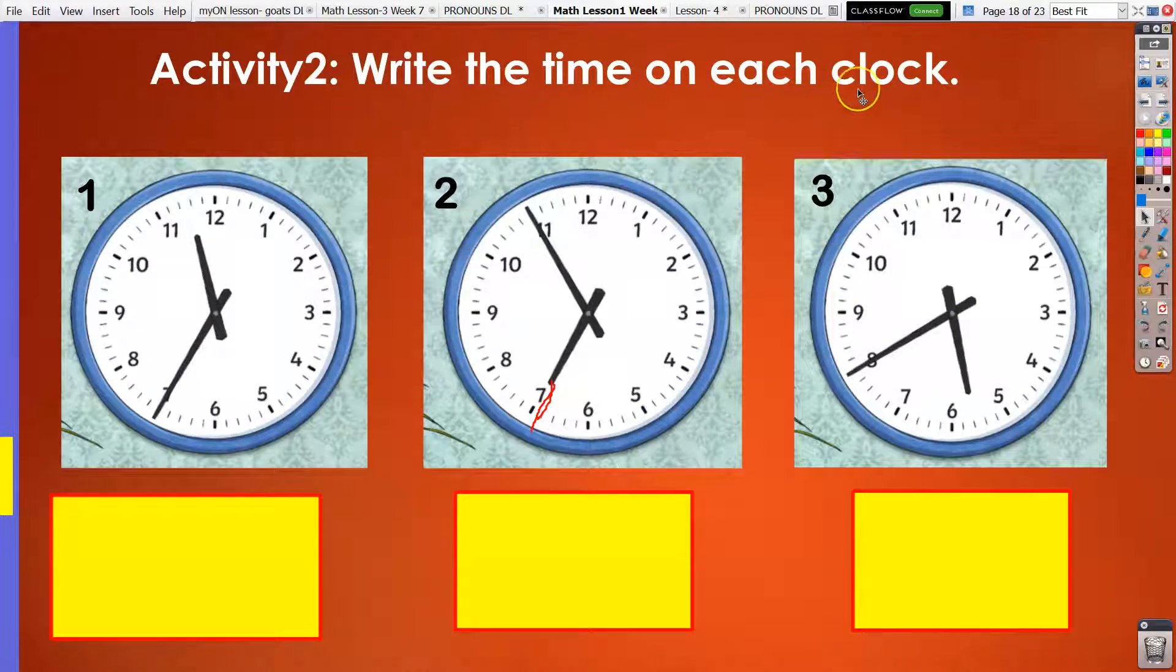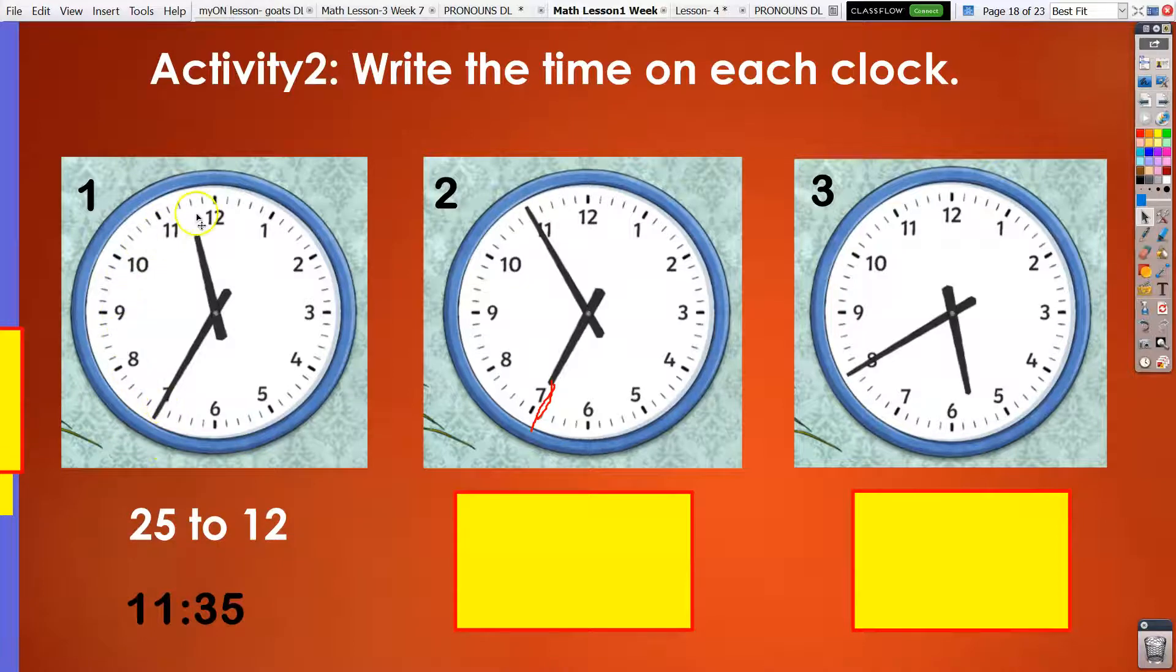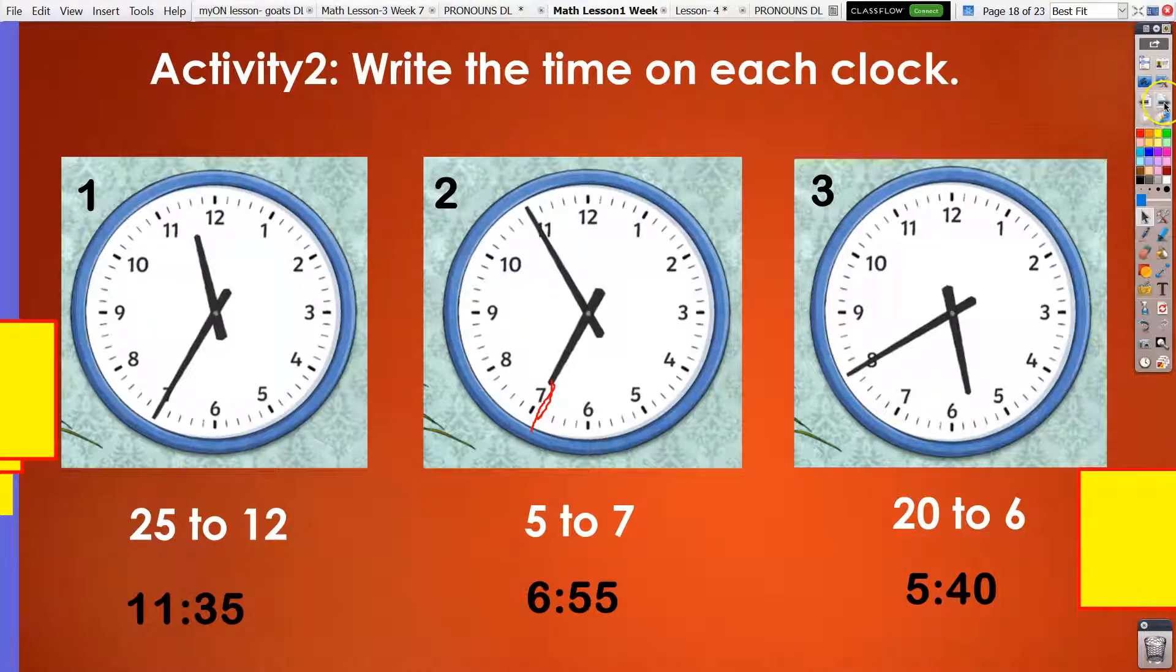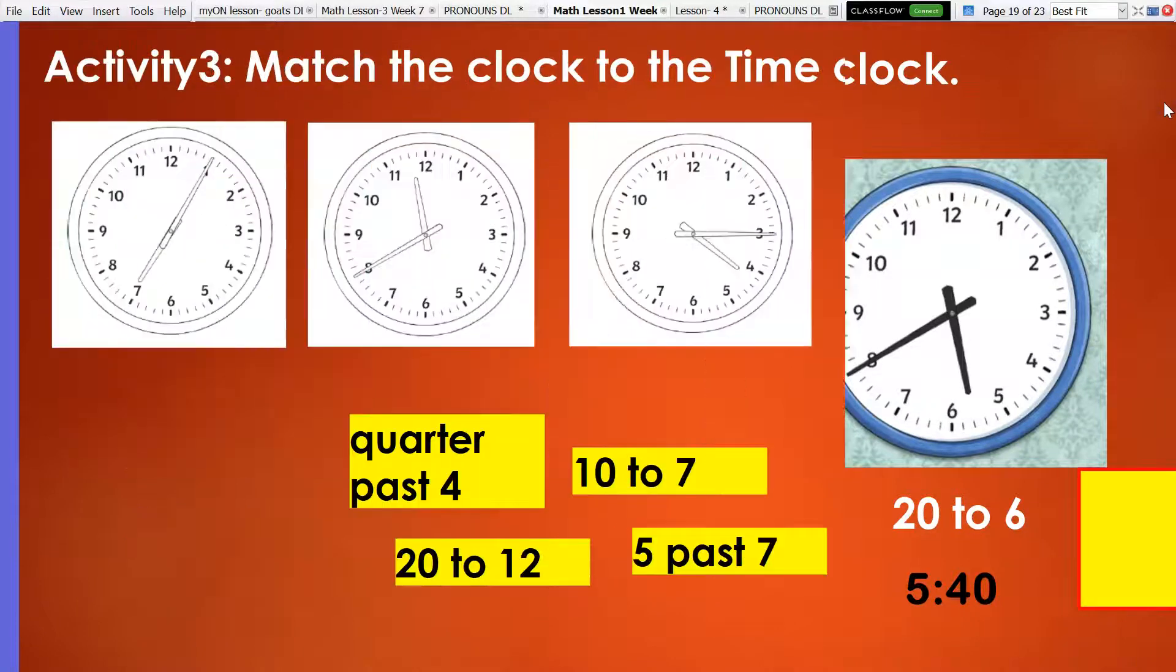Now, write the time on each clock. Pause the video and write your answers. Time is up. Clock 1, we got 25 to 12, or 11:35. Second clock, we got 25 to 7, or 6:55. And finally, we have 5, 10, 15, 20, 2, 6, or 5:40.